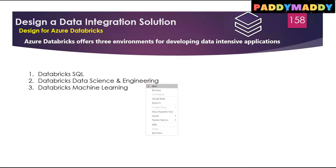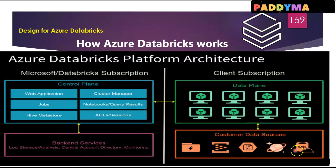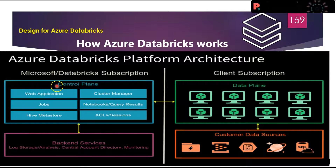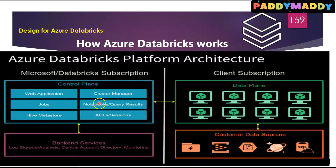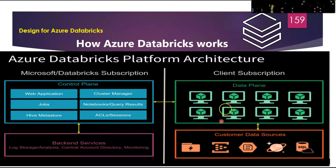Now let's look at how Azure Databricks works using a diagram. On the left side you have a Microsoft Databricks subscription, and on the other side is a client subscription which consists of a data plane. Inside the data plane, customers have data sources of multiple types like Cosmos DB or SQL. On the left, under the Microsoft Databricks subscription, you have a control plane, which consists of the web application, jobs, Hive Metastore, and cluster manager. These components handle nodes, query results, accounts for security, and sessions. The backend provides services for log storage, log analysis, and central account directory monitoring. All data processing and storage occurs within the client subscription.